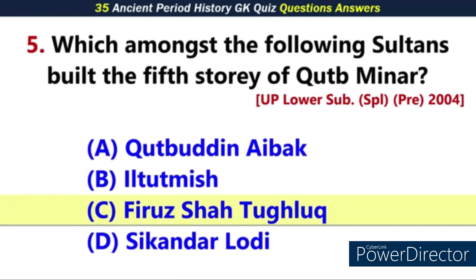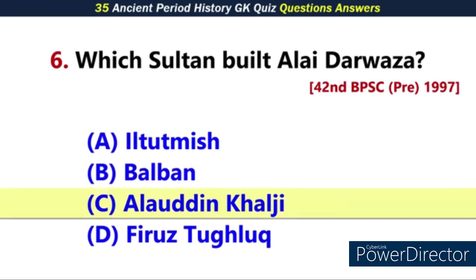Q4. What was the chief characteristic of the finance system of the Vijayanagara Empire? Q5. Which among the following sultan built the 5th storey of Qutub Minar?